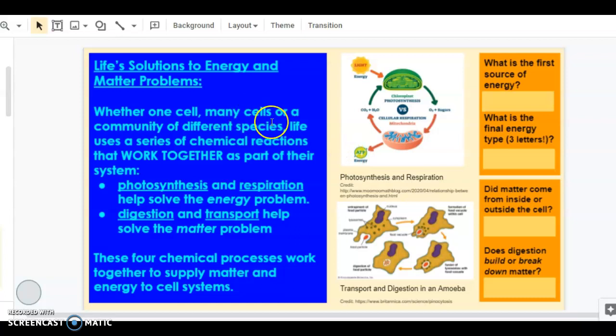Whether one cell, many cells, or a community, one of the solutions is going to involve chemical reactions. So when we're addressing energy and matter problems, chemical reactions are essential. We're going to look at four chemical reactions that really help solve energy and matter problems when they work together. They're photosynthesis, respiration, digestion, and transport. We see some diagrams over here of these processes. What is the first source of energy shown in this diagram? It is the sun. Up here at the top, introducing the energy. What is the final source of energy? It is ATP. So we move from solar energy, sun energy, light energy, to ATP, which we'll study more later.